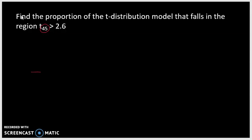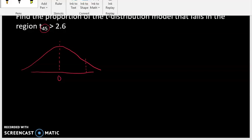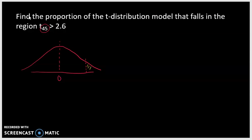I'll advocate getting a picture of this if you can. The t-distribution is sort of like the normal distribution — symmetric and bell-shaped, a little bit flatter than the normal. The mean of the t-distribution is 0, so 2.6 is somewhere greater than 0. The region we are looking for is a region that falls greater than 2.6.